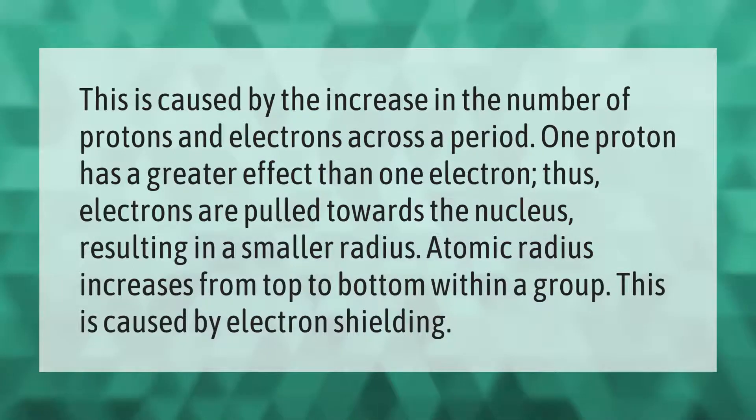This is caused by the increase in the number of protons and electrons across the period. One proton has a greater effect than one electron; thus, electrons are pulled towards the nucleus, resulting in a smaller radius.